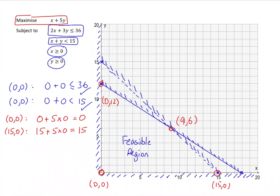Let's try 9, 6 next. So, we're going to have 9 plus 5 lots of 6. So, that would be 39. So, we're doing better. But, we still need to check 0, 12. So, we have 0 plus 5 lots of 12. Now, that is 60. So, actually, it hits 0, 12 first.